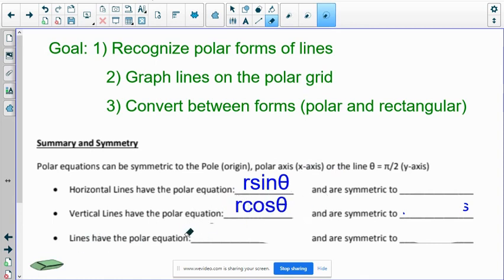And then lines that are just in polar is generally theta equal to some radian would give you another type of line.